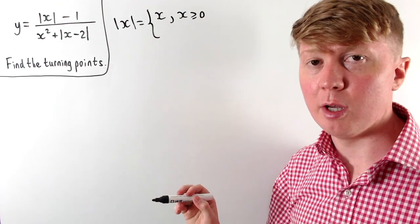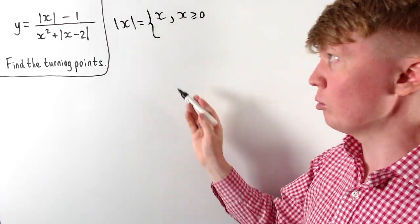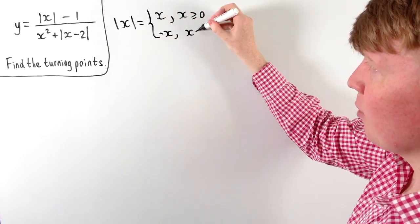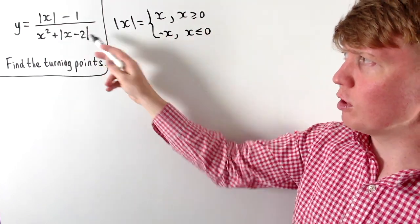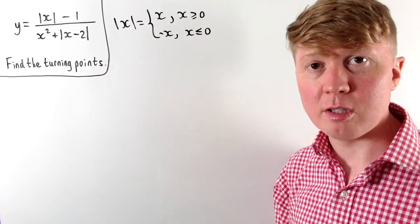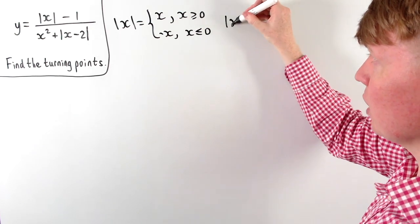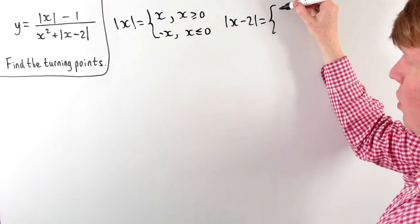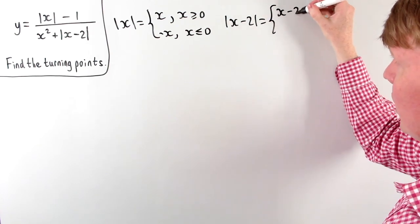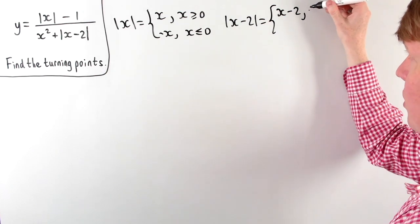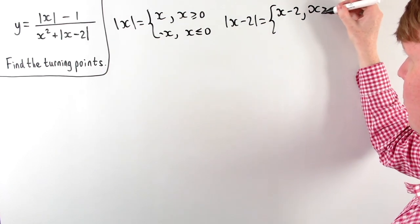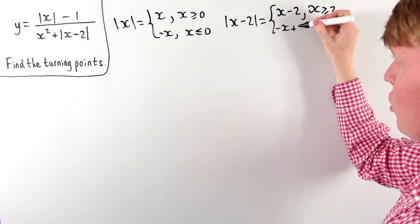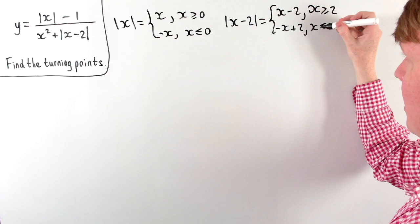But if we put in a negative number — say negative 3 — we get positive 3 as the output, so we change the sign when x is less than or equal to 0. Similarly, in the denominator we have the modulus of x minus 2, which equals x minus 2 when x is greater than or equal to 2, and negative x plus 2 when x is less than or equal to 2.